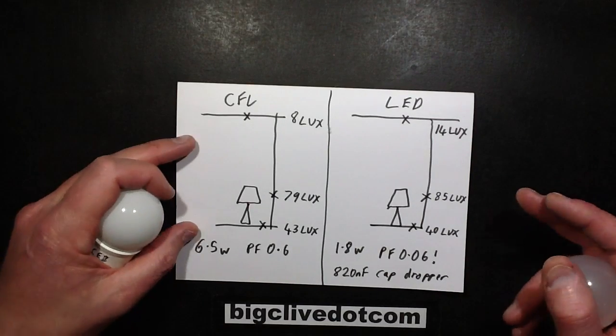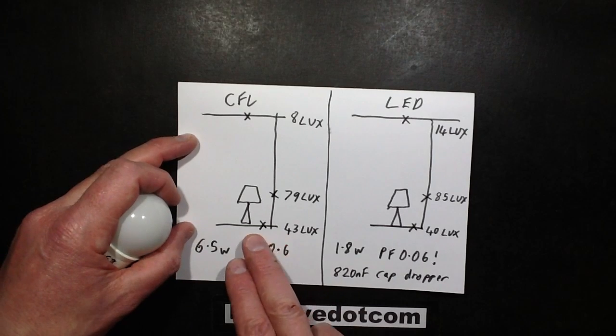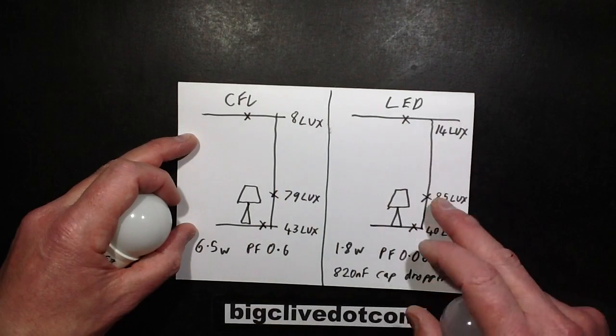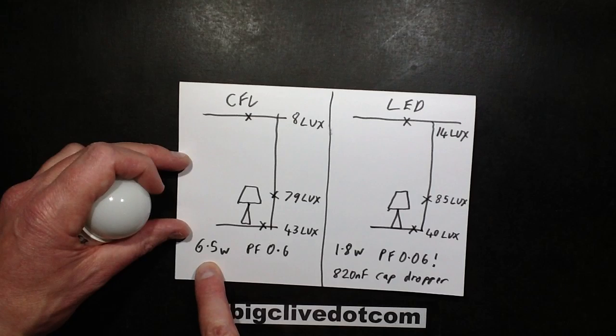The only time that the compact fluorescent lamp won was by a margin on the area just below the light, because everywhere else the LED lamp beat it. And you're thinking that's 1.8 watts versus 6.5 watts.